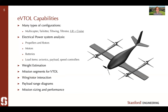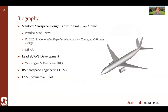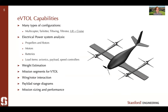For SUAVE, the basic things we'll cover include electrical power system analysis: propellers and rotors — and part of the reason I picked lift-plus-cruise is that distinction between propellers and rotors. We'll also go over motors, batteries, and load items. Some things we'll skip today due to time, including weight estimation capabilities. We will go over mission segments for VTOL. Wing and rotor interaction is possible in SUAVE but we're not doing that today because this configuration's wing and rotor locations don't really interact favorably. We'll also skip payload range diagrams and mission sizing performance.